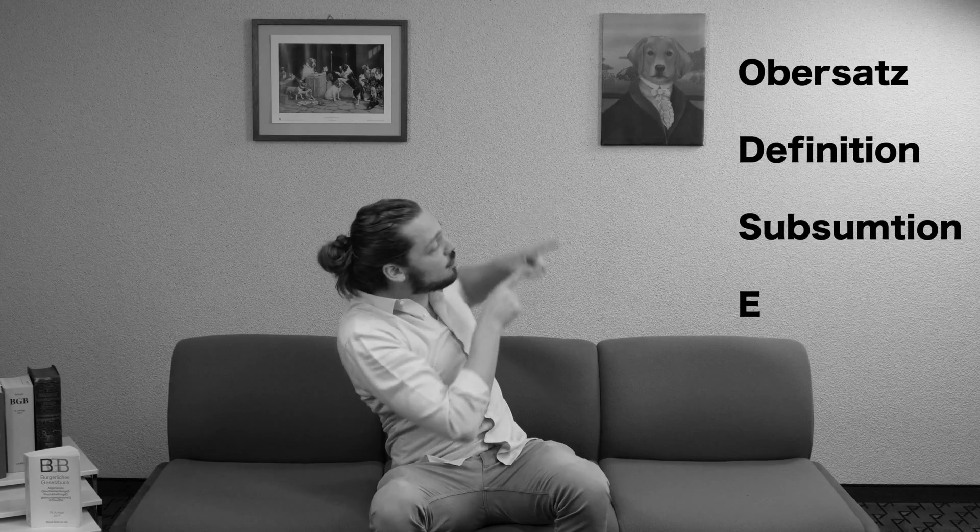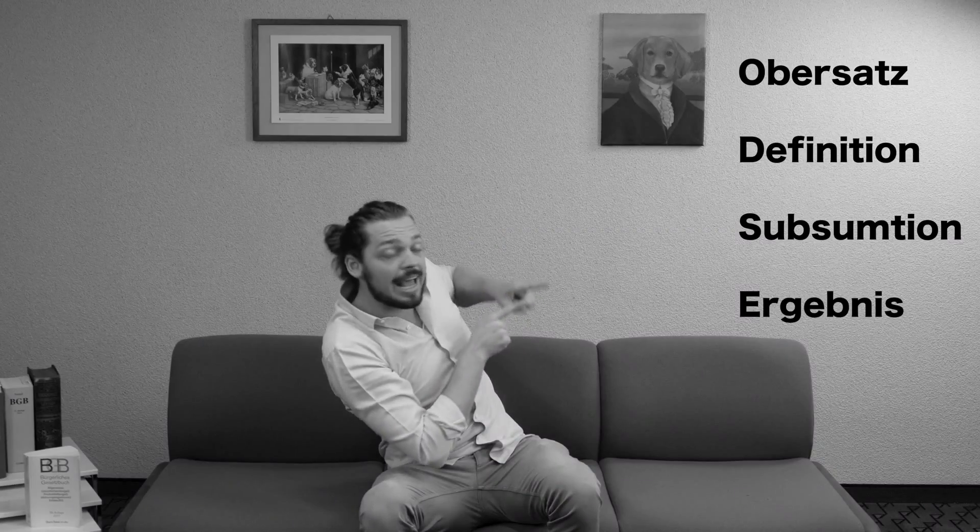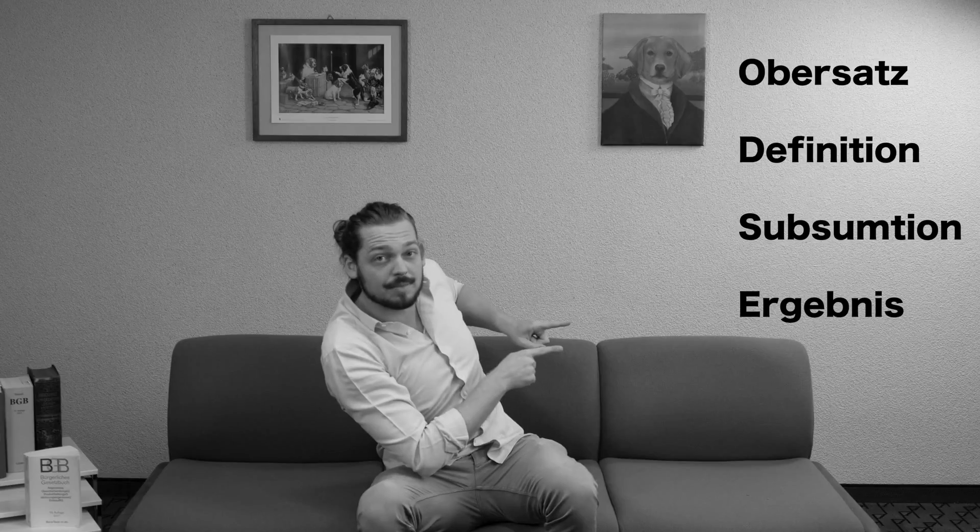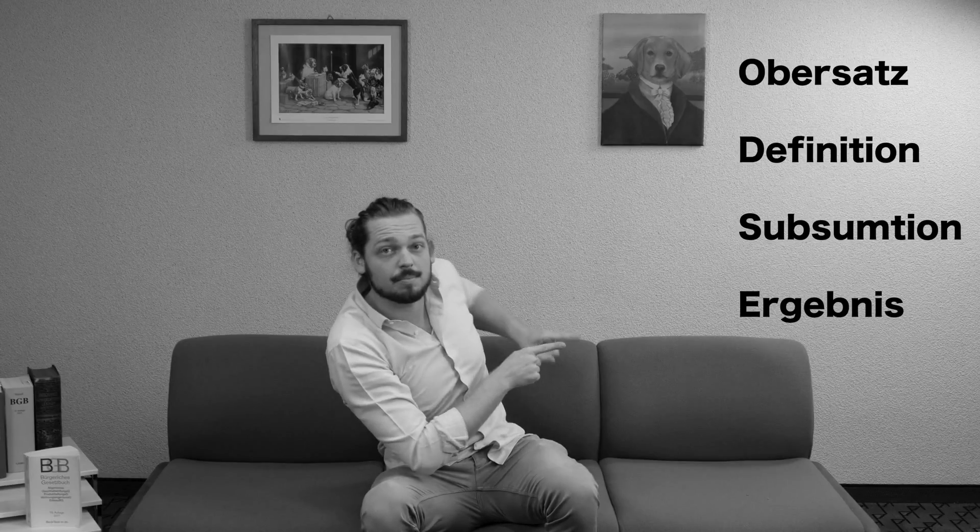Daraufhin subsumiert er den Sachverhalt unter die Norm – an dieser Stelle legt er den konkreten Sachverhalt und die abstrakte Norm aufeinander. Hierbei geht es regelmäßig um die Wertung der einzelnen Interessen. Anschließend kommt er zu einem Ergebnis, nämlich dass der Sachverhalt entweder auf die Norm bzw. den normativen Begriff passt oder eben nicht.